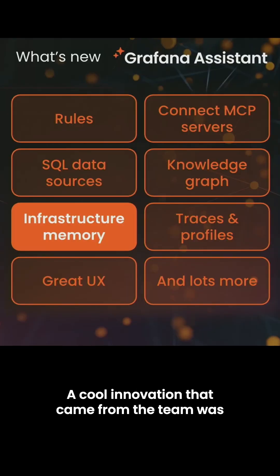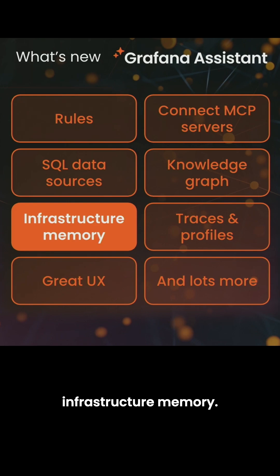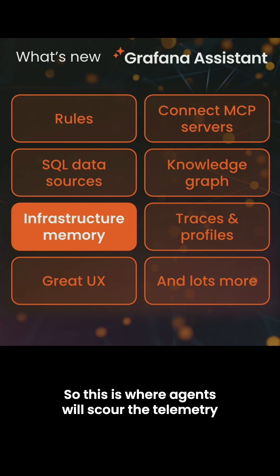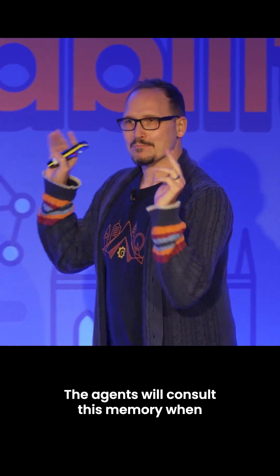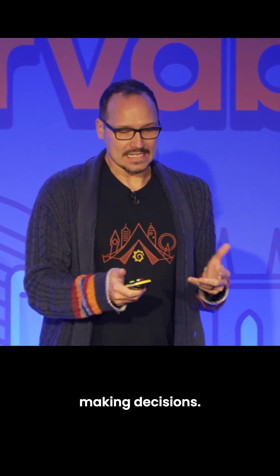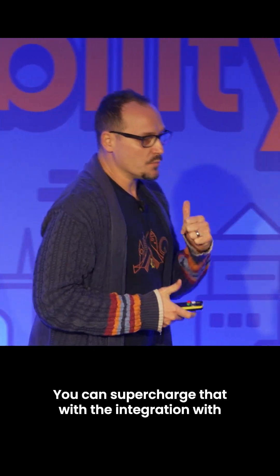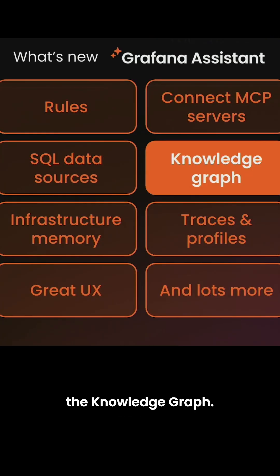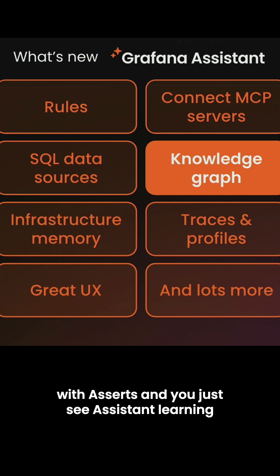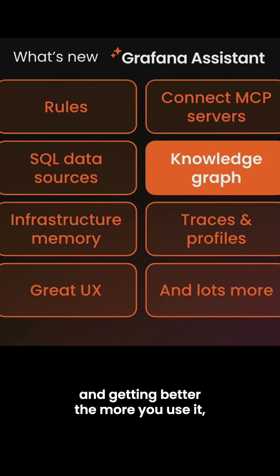A cool innovation from the team is infrastructure memory. This is where agents scour the telemetry beforehand and build a map of what they see. This helps Assistant answer questions faster in the future — the agents consult this memory when making decisions. You can supercharge that with the integration with the knowledge graph and the certs. You just see Assistant learning and getting better the more you use it.